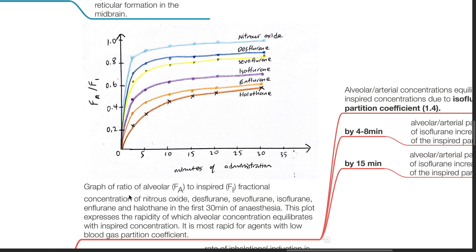This is a graph of the ratio of alveolar FA to inspired FI fractional concentration of nitrous oxide, desflurane, sevoflurane, isoflurane, enflurane, and halothane in the first 30 minutes of anesthesia. This plot expresses the rapidity of which alveolar concentration equilibrates with inspired concentration. It is most rapid for agents with low blood gas partition coefficient such as nitrous oxide and desflurane.